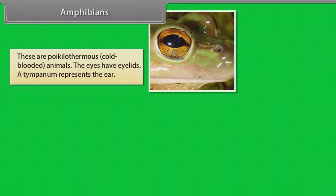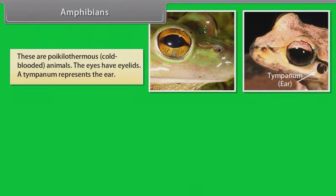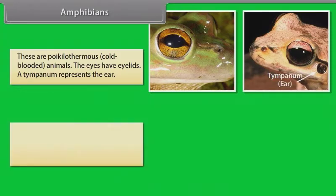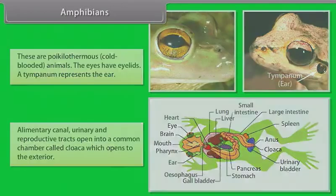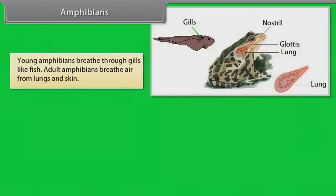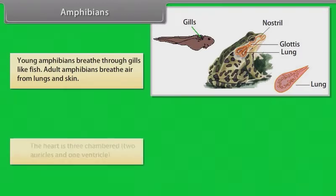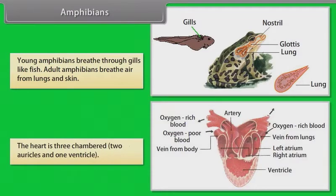The eyes have eyelids. A tympanum represents the ear. Alimentary canal, urinary and reproductive tracts open into a common chamber called cloaca, which opens to the exterior. Young amphibians breathe through gills like fish. Adult amphibians breathe air from lungs and skin. The heart is three-chambered — two auricles and one ventricle.